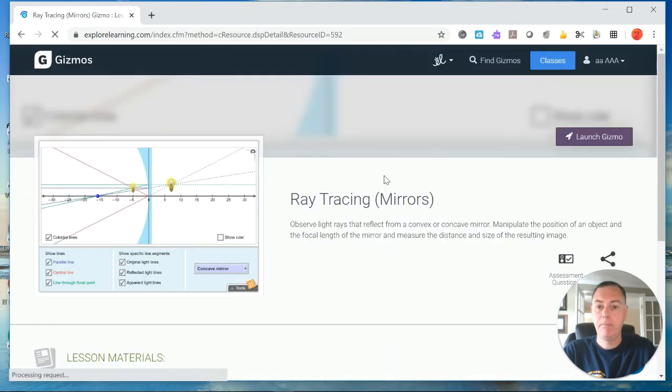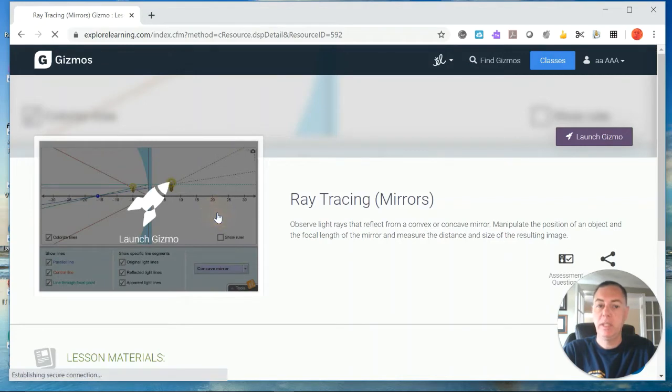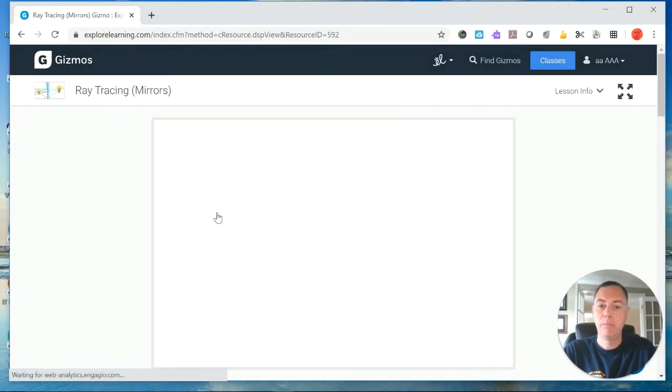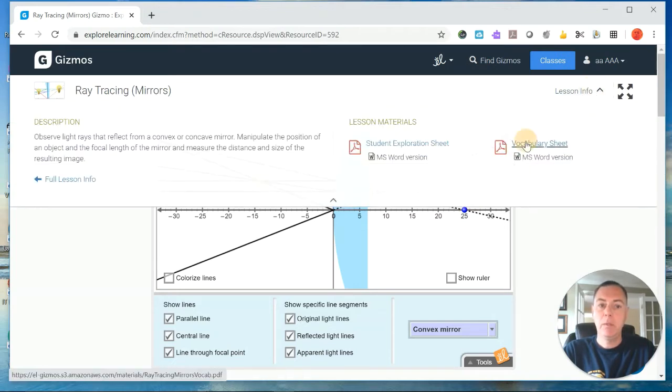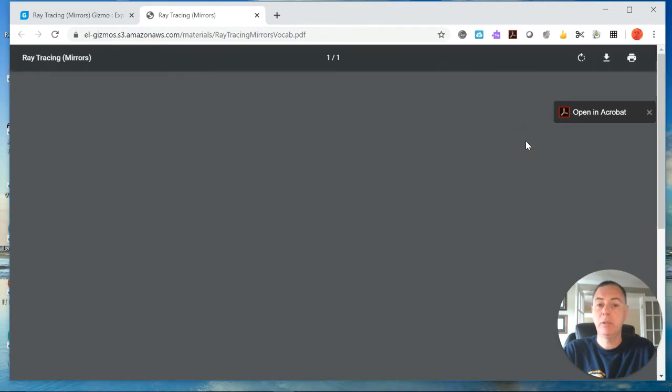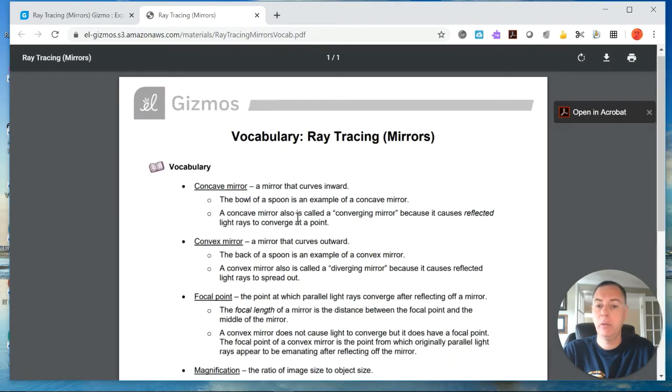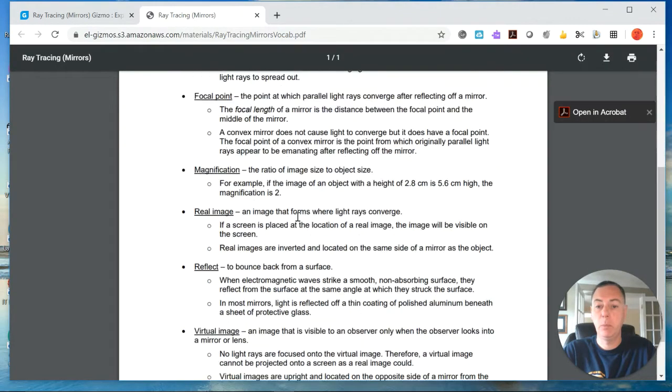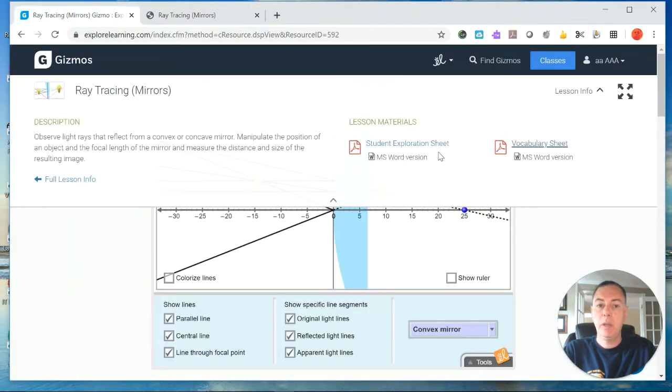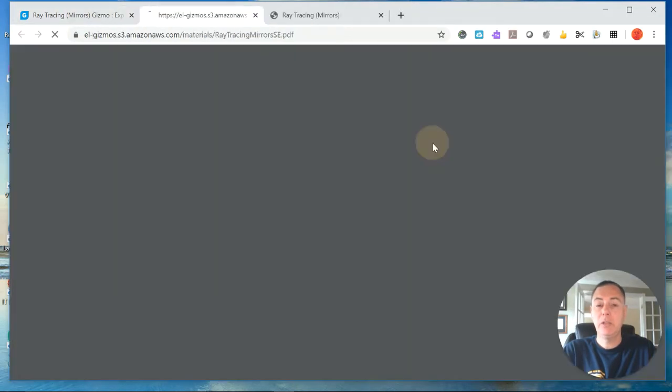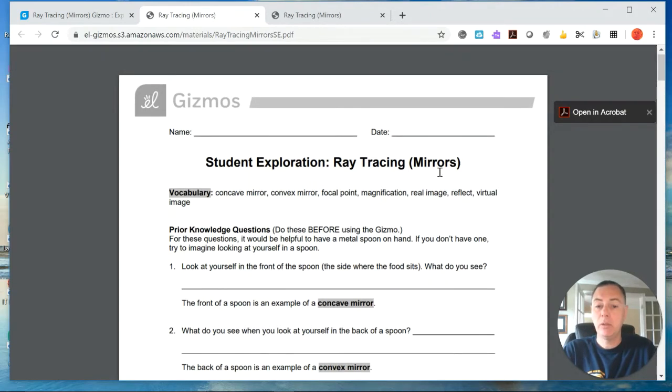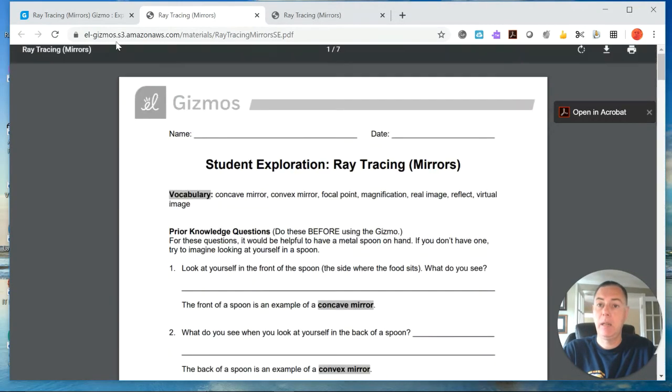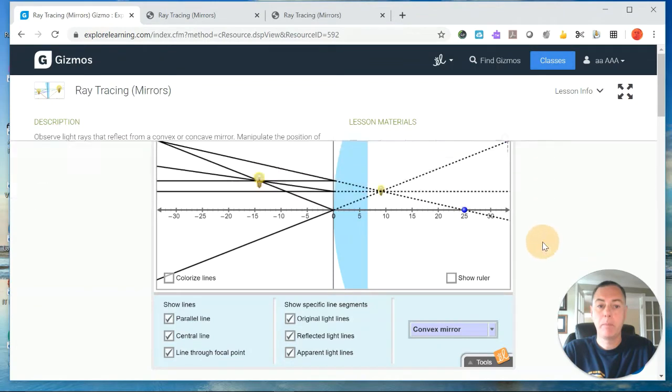As always when you're doing this, under the Lesson Info, the vocabulary sheet is always a handy resource to have while you're going through this. You'll notice that some of these terms should be familiar to you. We also want the Student Exploration sheet because that is the guide and tells us how to complete the Gizmo and where to record our answers and data.